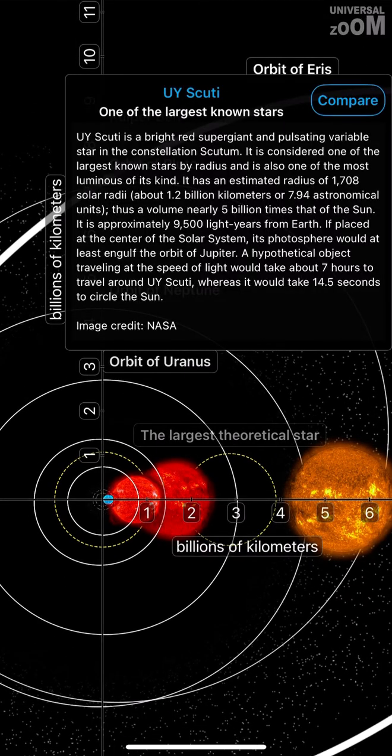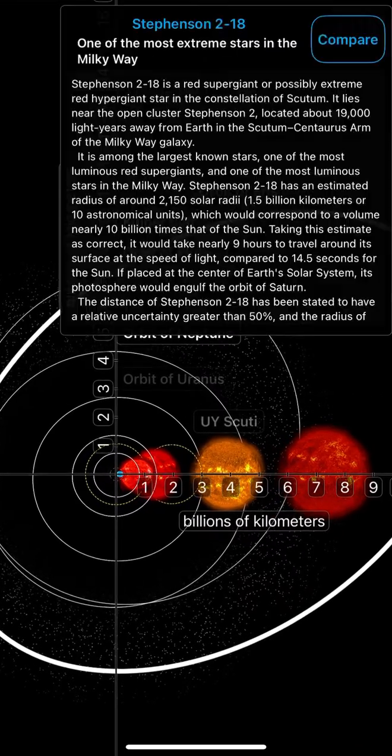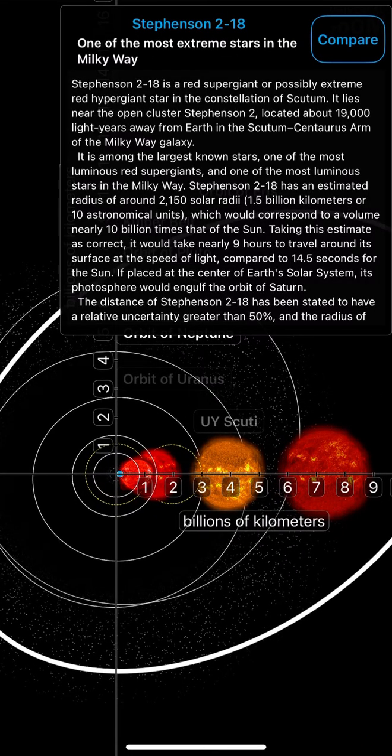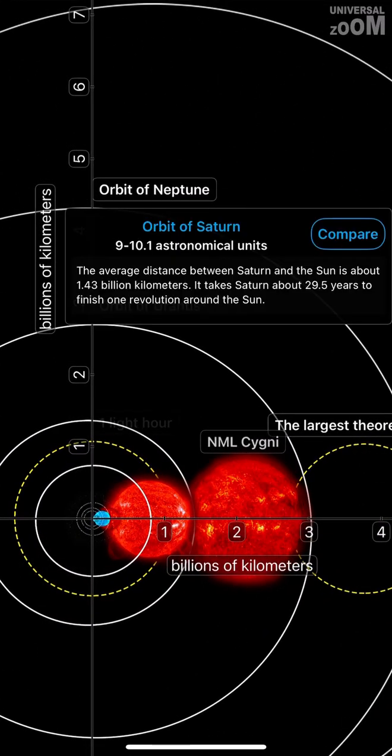UY Scuti, one of the largest known stars. Stevenson 218, one of the most extreme stars in the Milky Way. Orbit of Saturn, 9 to 10.1 astronomical units.